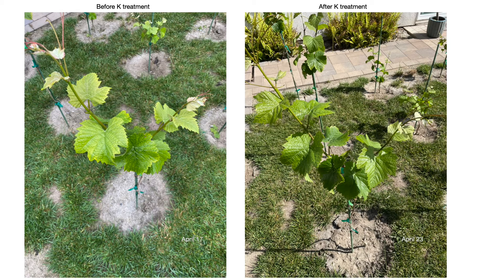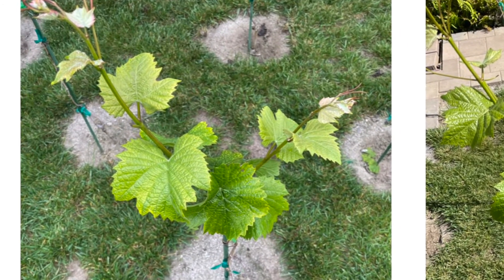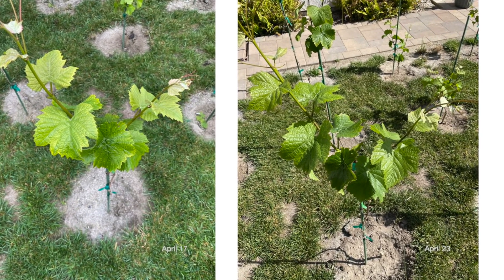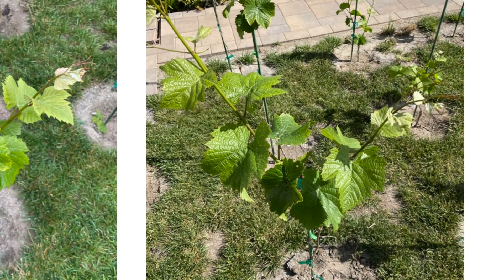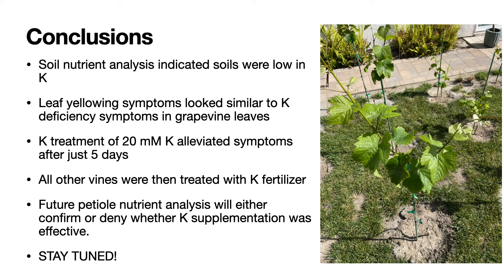Let's take a look at the results of my potassium treatment after five days. On the left is the original plant before treatment with potassium, and on the right is the plant five days later. You can see that the plant is much greener and the yellowing has disappeared. This indicates that the potassium treatment was effective and the plant was indeed potassium deficient. In conclusion, the soil nutrient analysis indicated that my soils were low in potassium, and the leaf yellowing symptoms that I had in a couple of vines looked similar to potassium deficiency symptoms in grapevine leaves. A potassium treatment of 20 millimolar potassium alleviated the symptoms after just five days.